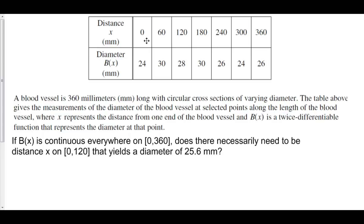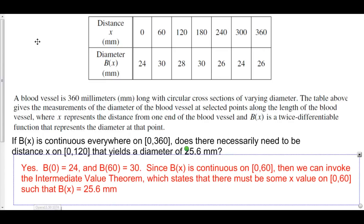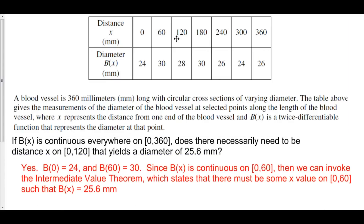Here's how we would write this out. Yes — b of 0 is equal to 24 and b of 60 is equal to 30. Since b of x is continuous from 0 to 60, we can invoke the Intermediate Value Theorem, which states that there must be some x value from 0 to 60 such that b of x is equal to 25.6 millimeters. And that is how we invoke the Intermediate Value Theorem.